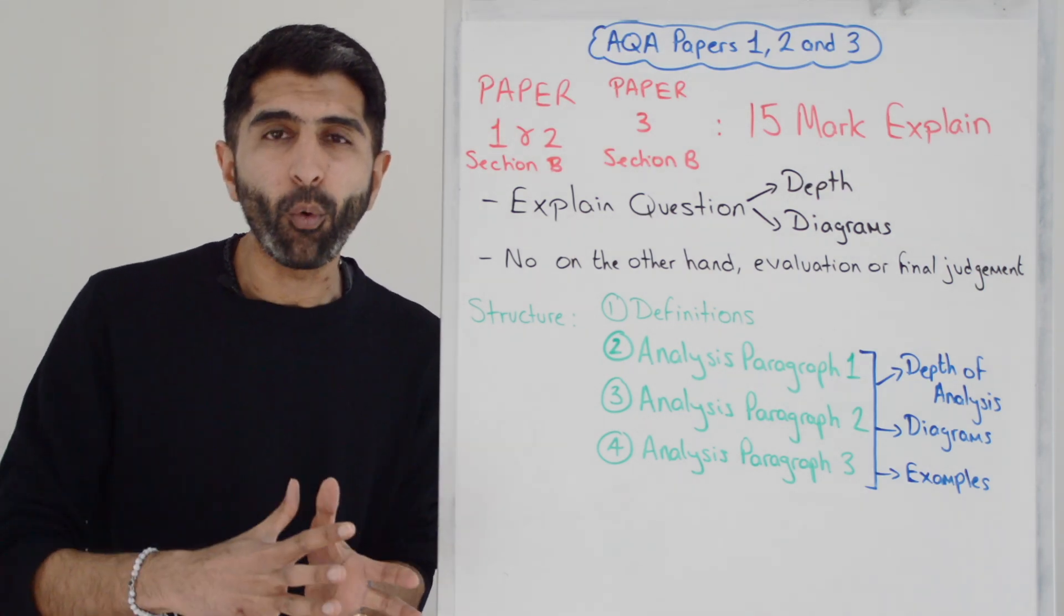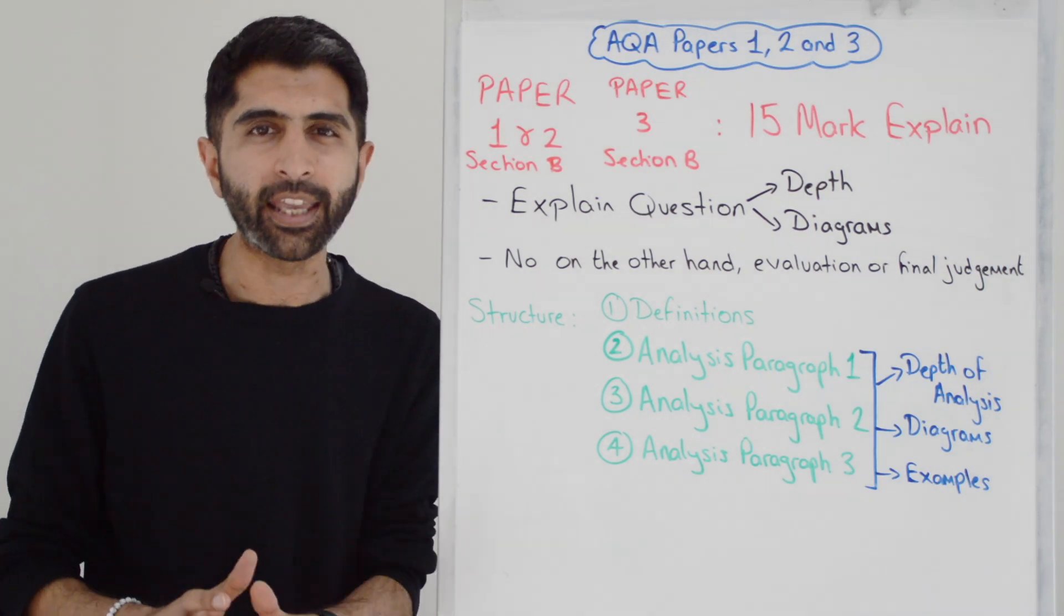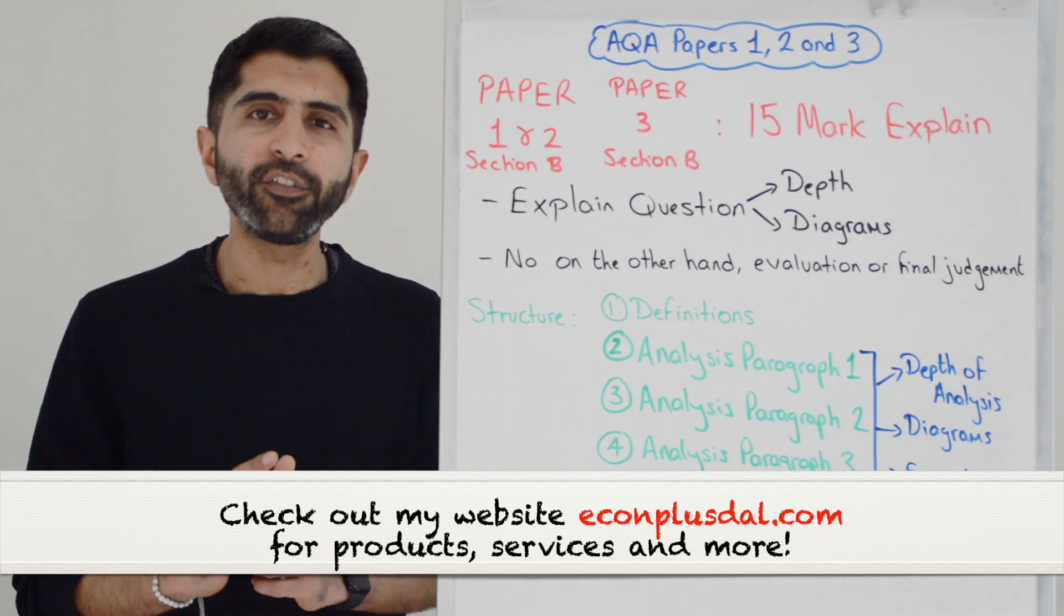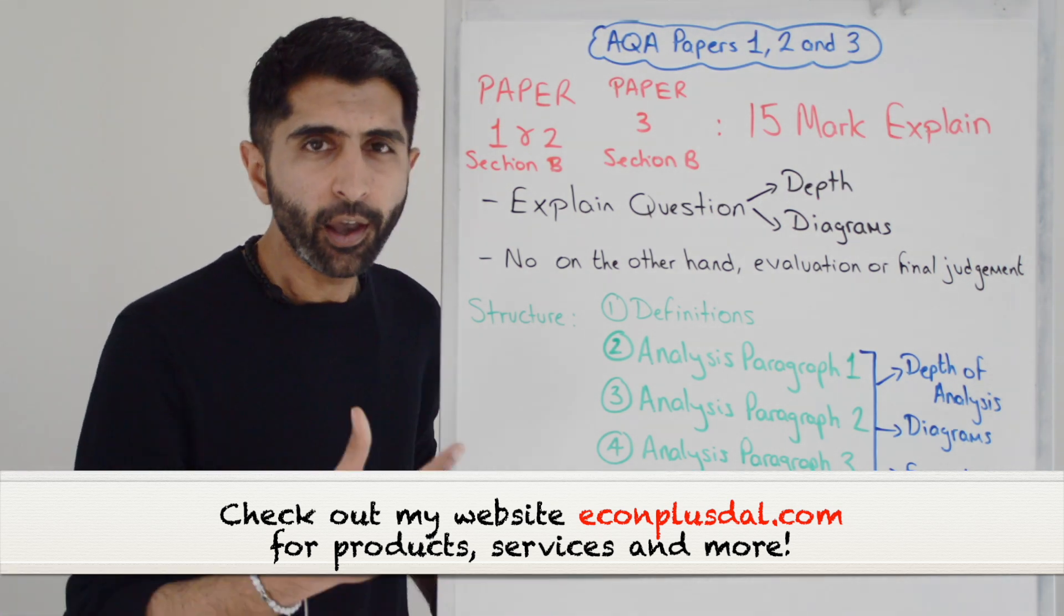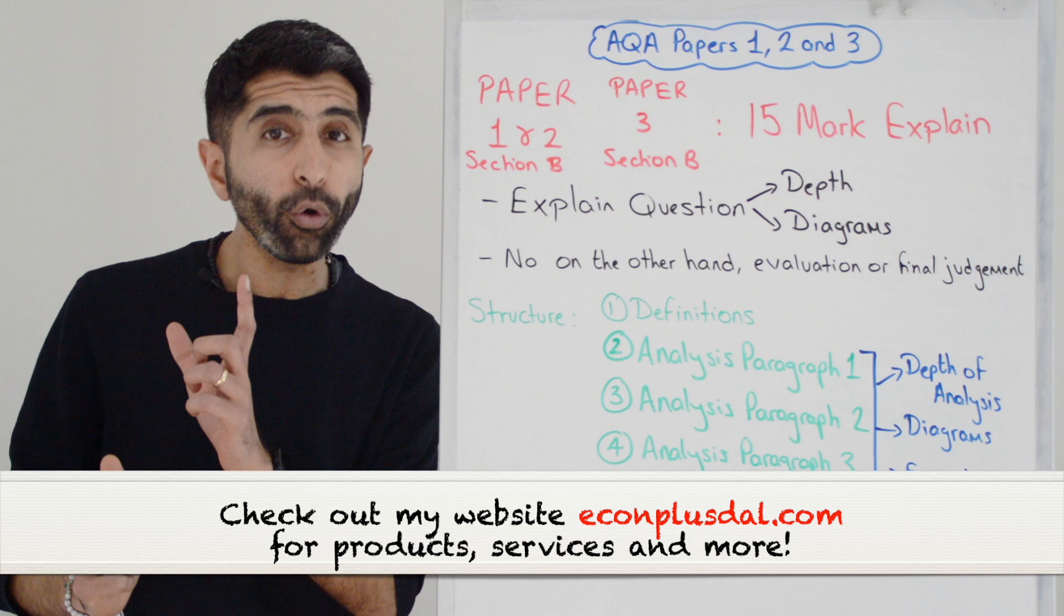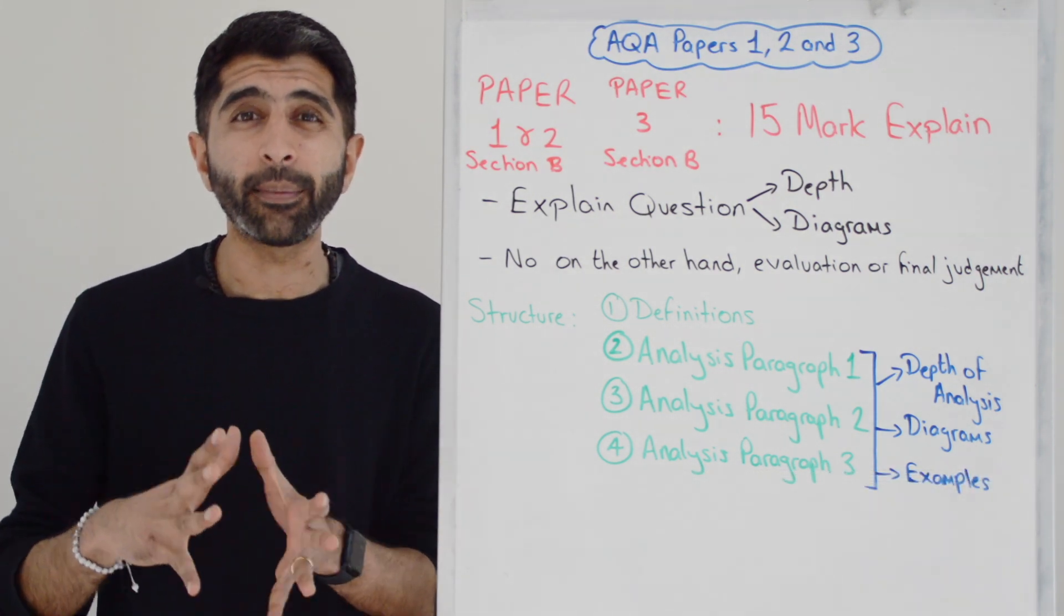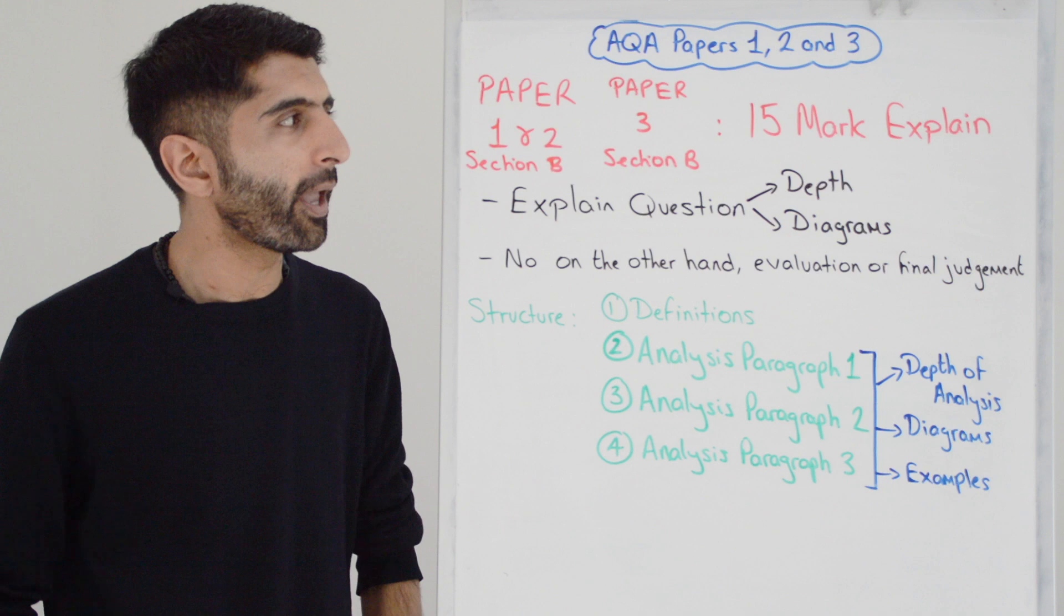Hello AQA students, we're in Paper 1, Paper 2 and Paper 3 looking at the 15-mark question. Know that the 15-mark will come up in Section B of Paper 1 and Paper 2. It will also come up in Section B of Paper 3. It's exactly the same style of question in all three papers.